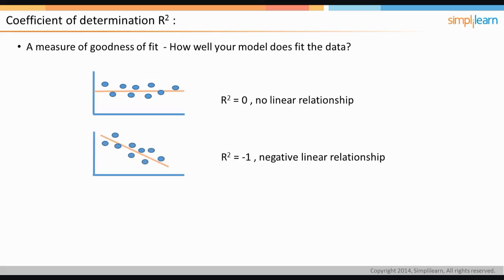In the second figure, the R squared value is minus one, implying a negative linear relationship.